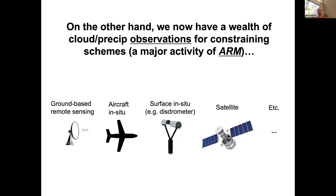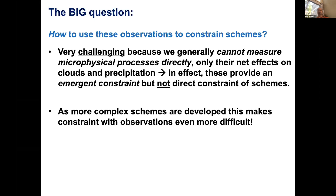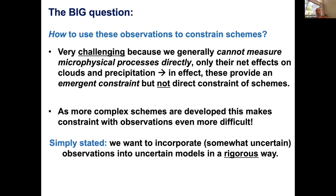We now have a wealth of cloud and precipitation observations for constraining schemes, which is a major activity within ARM from a variety of platforms. But the big question is how can we actually use these observations to constrain microphysics schemes? This is very challenging because in general we cannot measure microphysical process rates directly, only their net effects on clouds and precipitation. We can observe cloud and precipitation properties, but these are influenced by time-integrated interacting process rates. So these observations provide an emergent constraint on model behavior, but not a direct constraint of the process rates. And as schemes become more complex, this makes constraint with observations even more difficult.